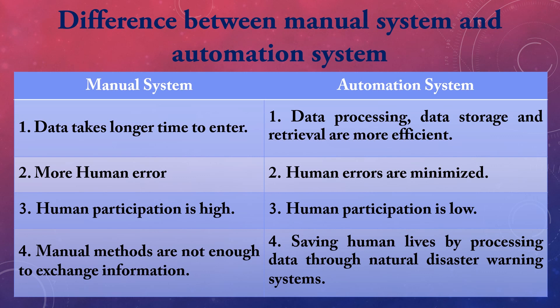For example, if a customer needs to know something, they will take more time to collect that data. Data inconsistency may also occur in manual methods. Inconsistency means the same data occurring in two different files in different formats or with different values. When the same data exists in different files, updating or deleting it cannot be done easily.